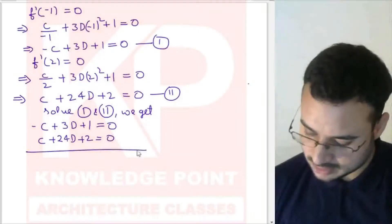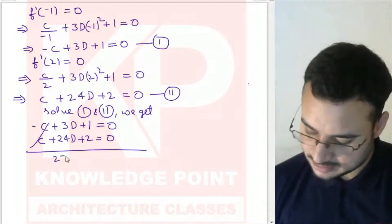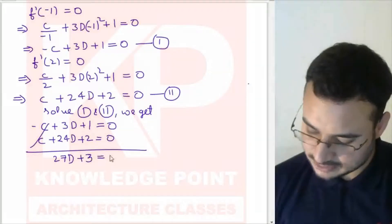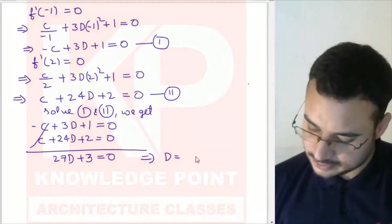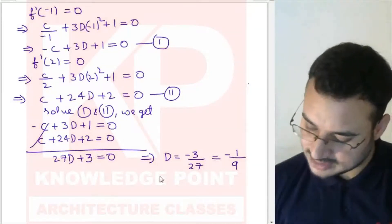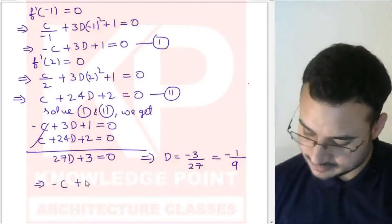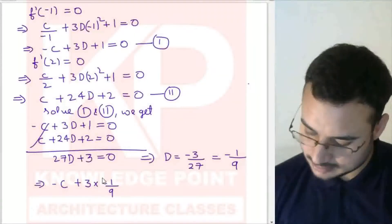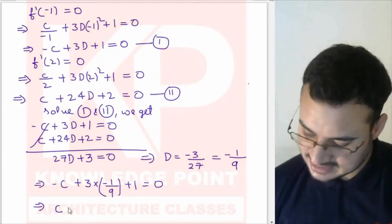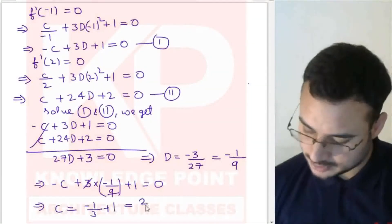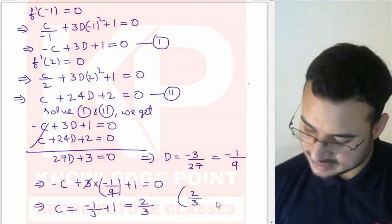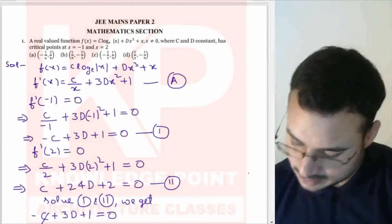Solving the first and second equations together, we get 27d + 3 = 0, so d = -3/27 = -1/9. Substituting d = -1/9 back into the first equation: -c + 3·(-1/9) + 1 = 0, giving c = -1/3 + 1 = 2/3. Therefore, c = 2/3 and d = -1/9.